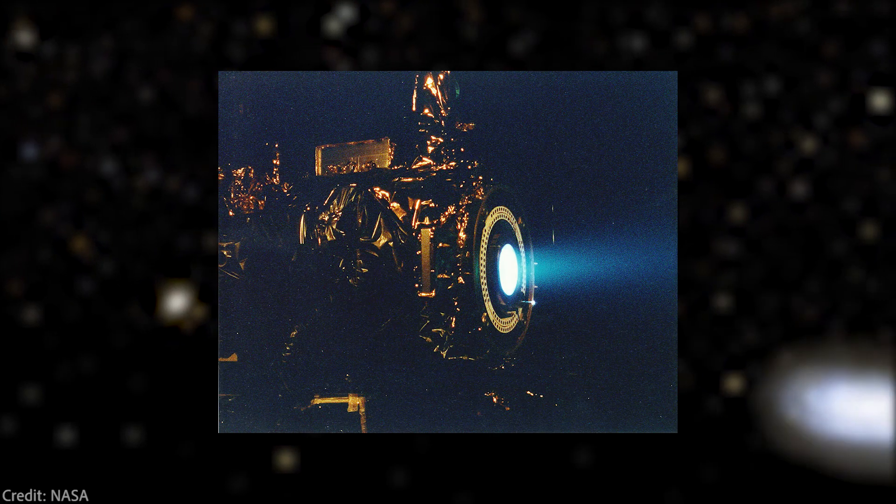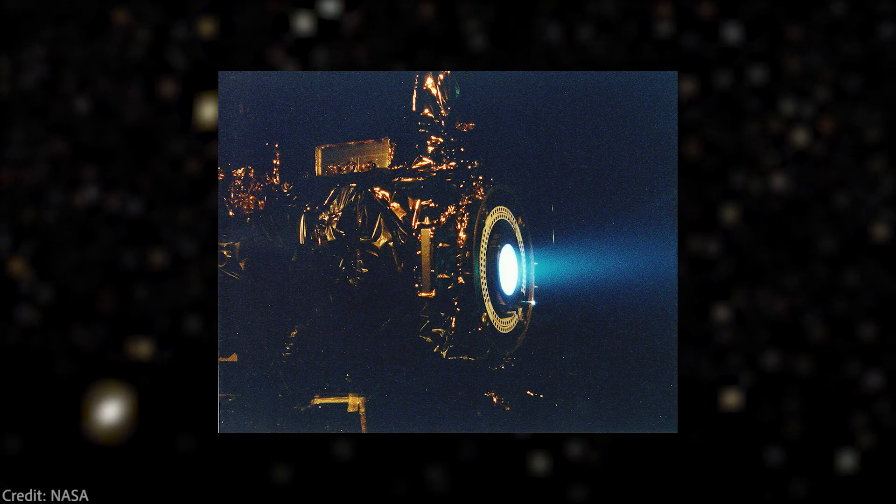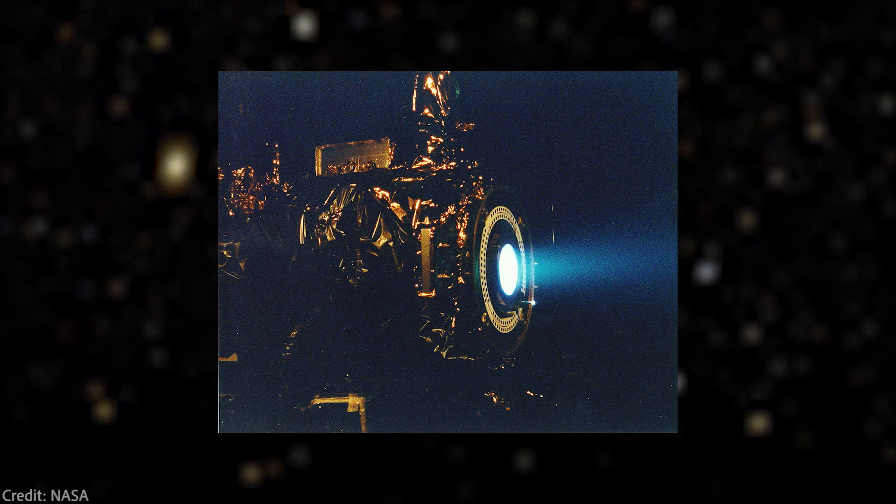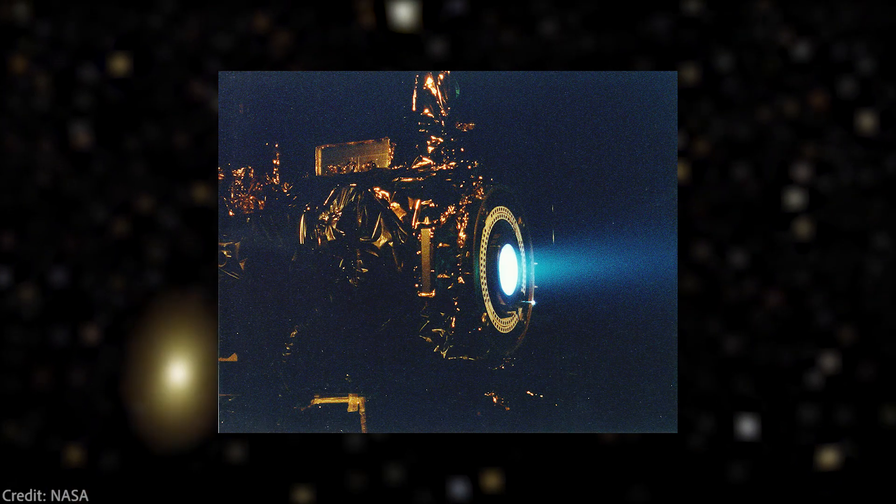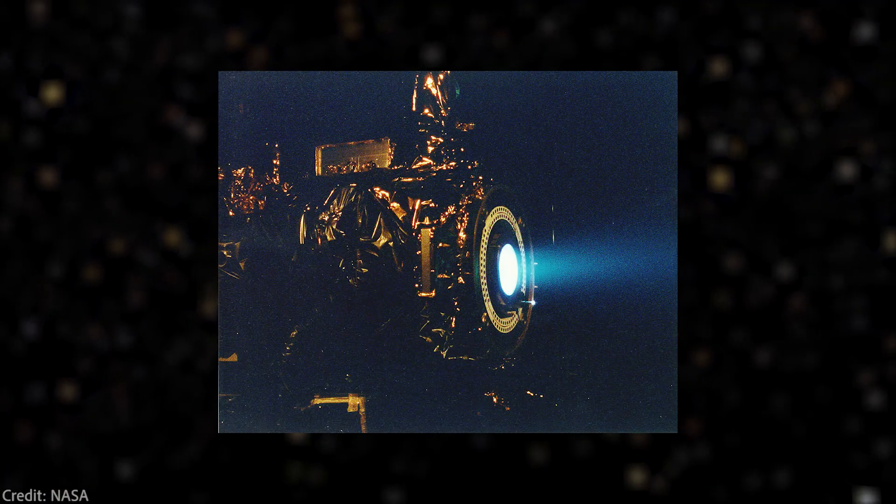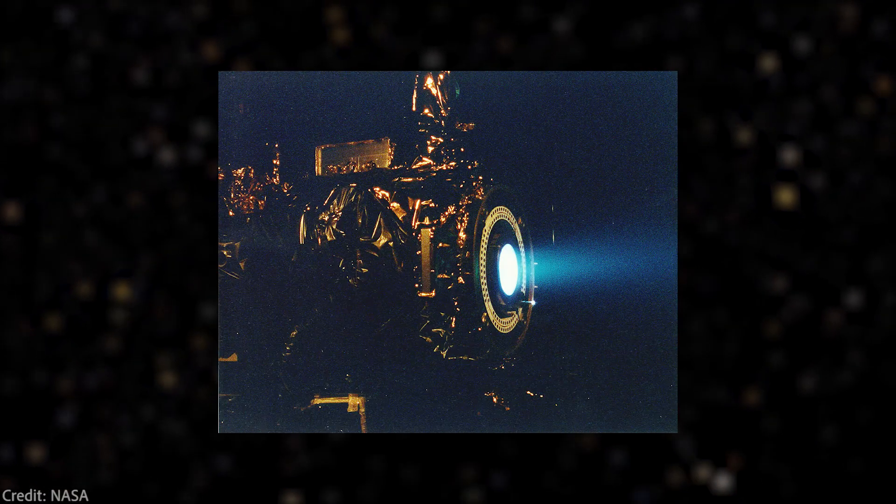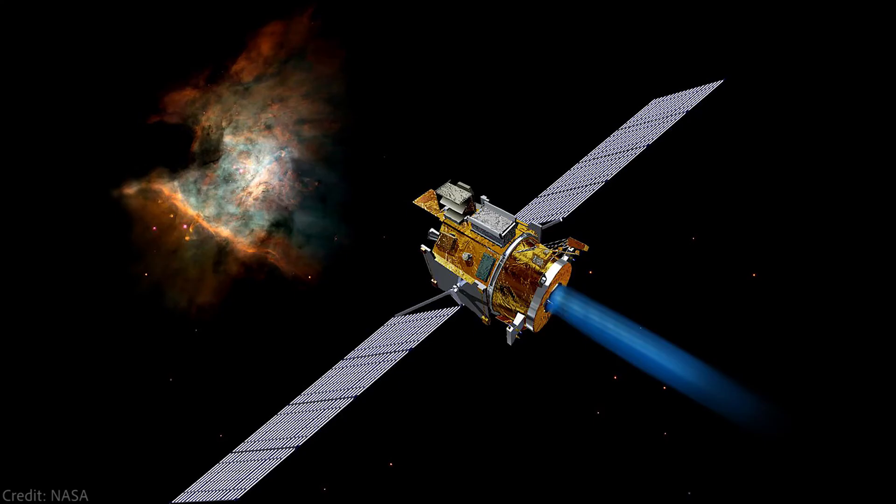Electric thrusters have been used in space since 60s and 70s, but over the most of this period, they never were the main engines on spacecraft. They were only used for altitude control, to change their orientation and so on. But as the main engine on the spacecraft, it was used only recently. In 1998, the experimental mission Deep Space One was first to use an ion drive as the main engine.